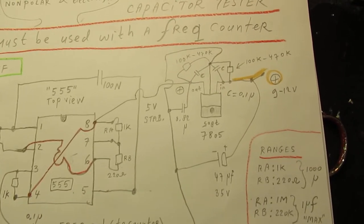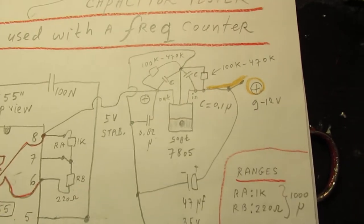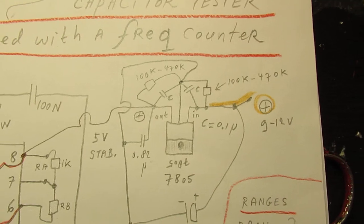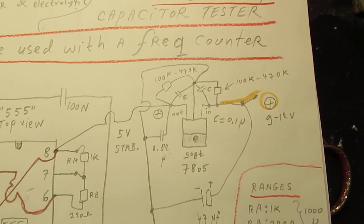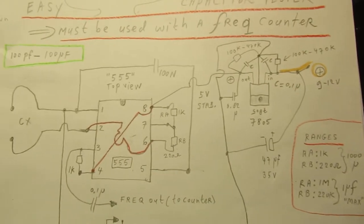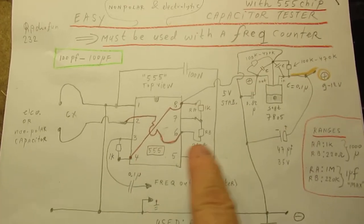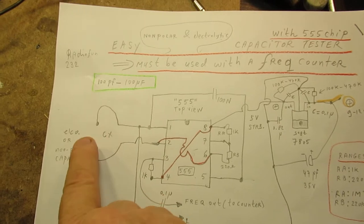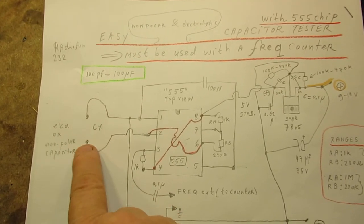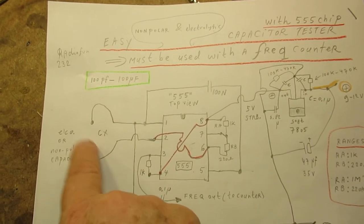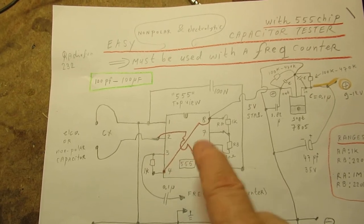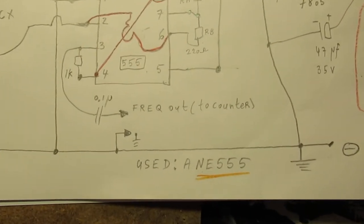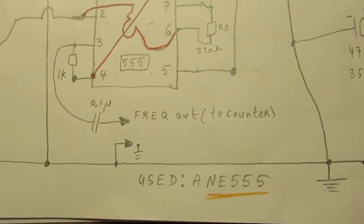And I have adapted the circuit somewhat by using a 7805 voltage stabilizer because it is a measurement circuit. So the whole principle of this is that a certain capacitor, a certain capacitance, gives out a certain frequency.